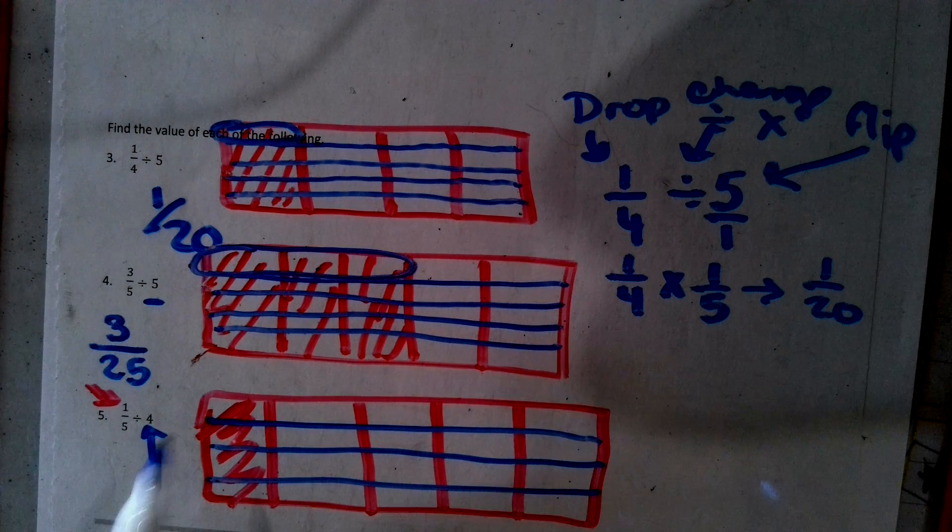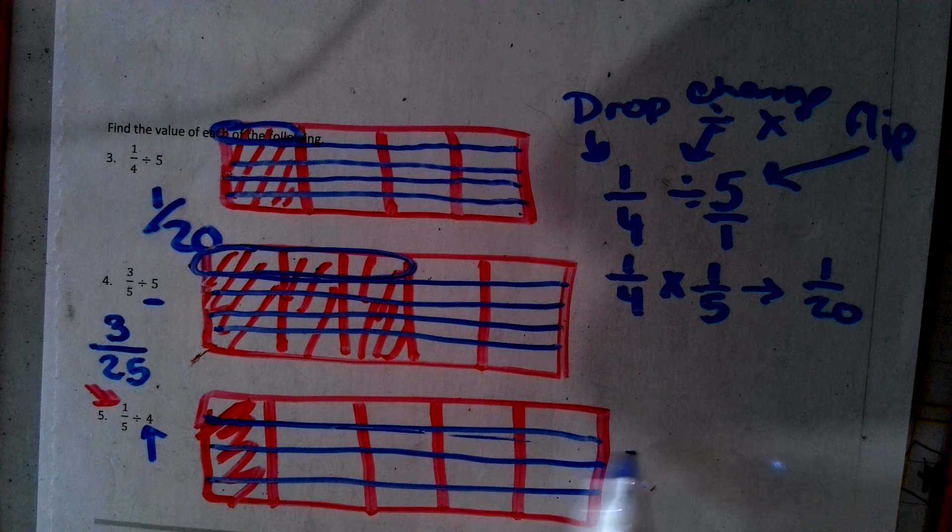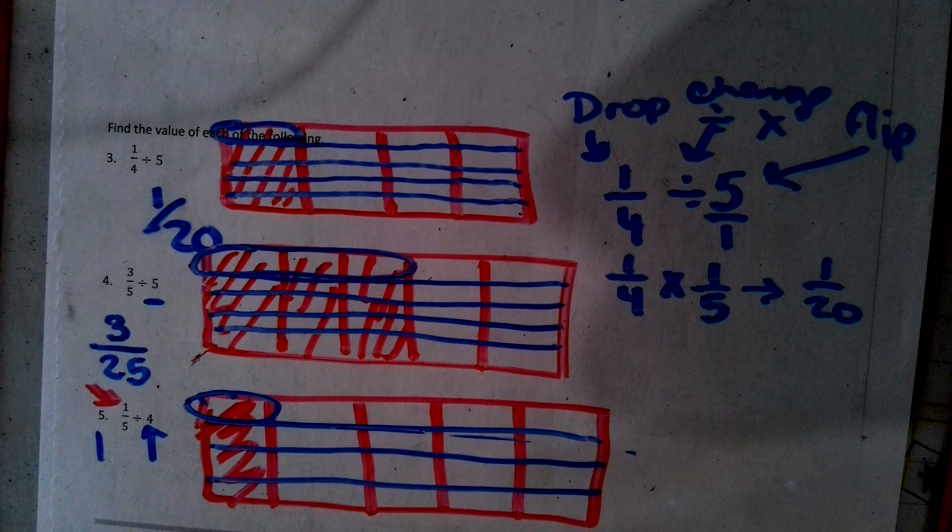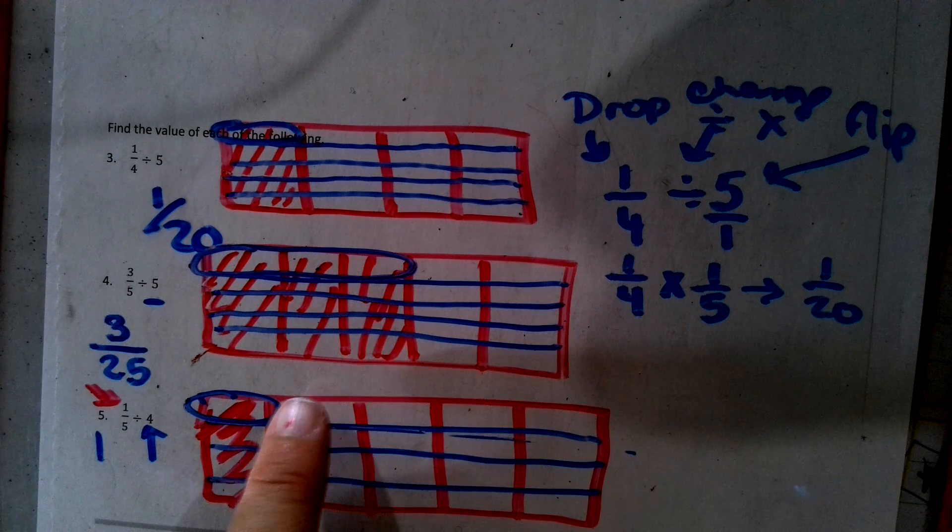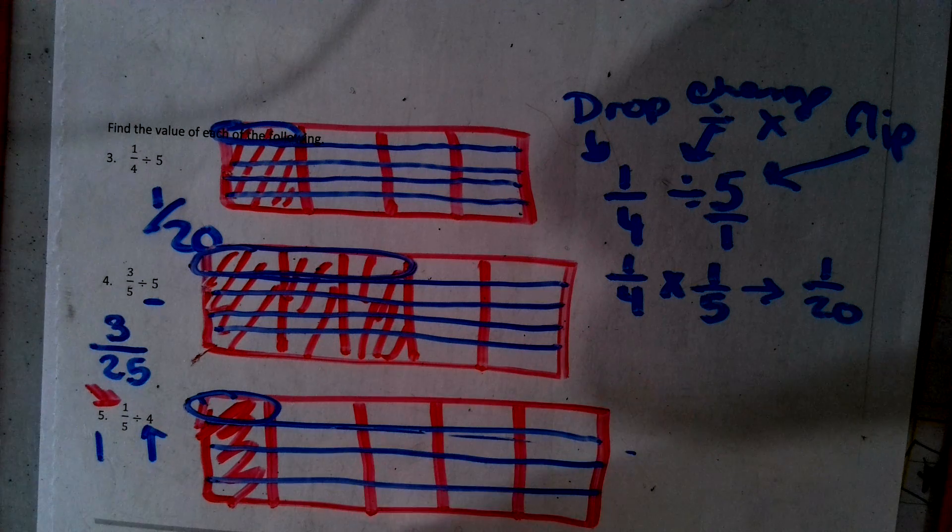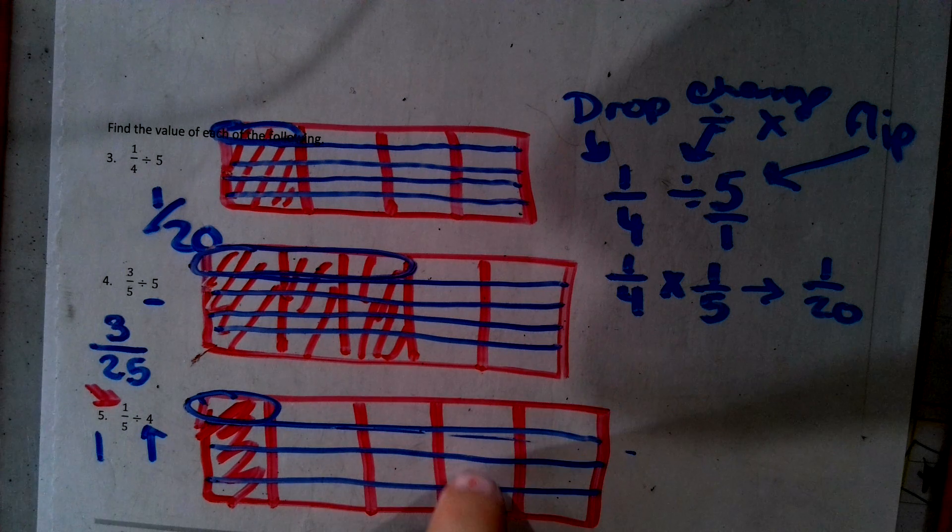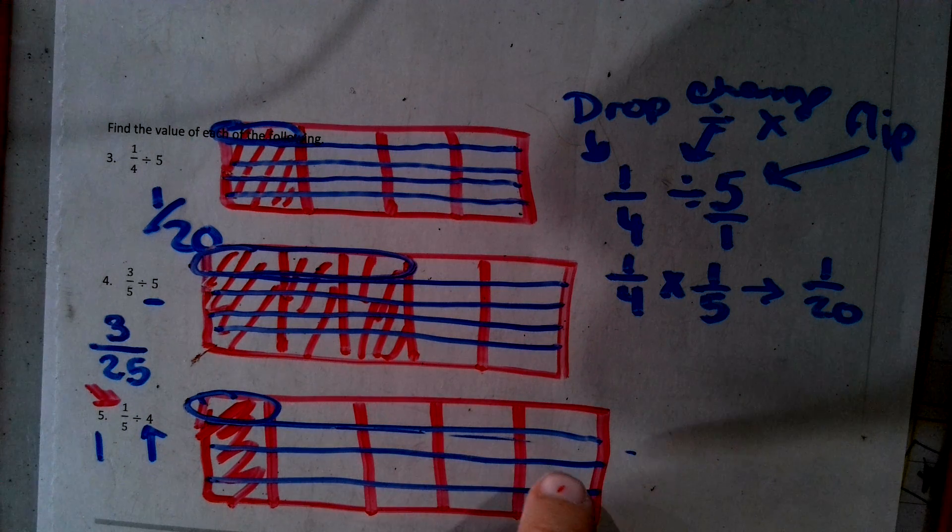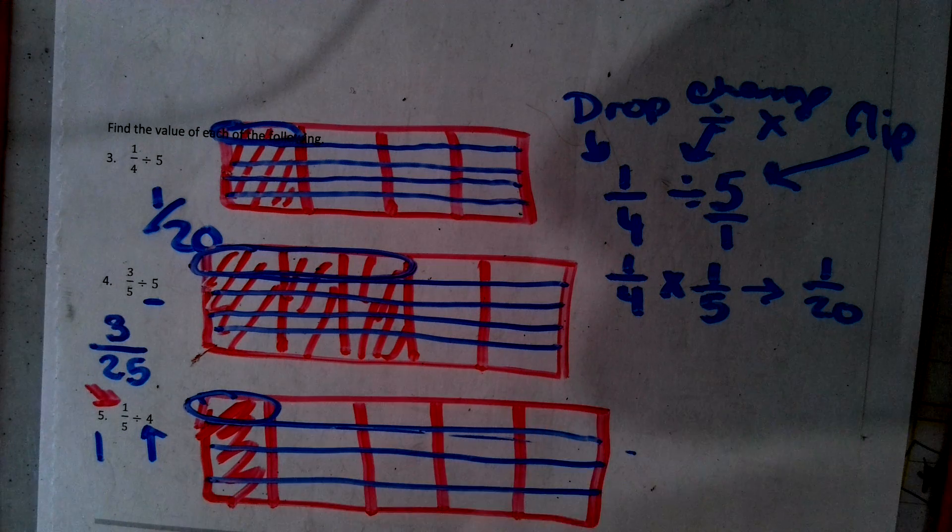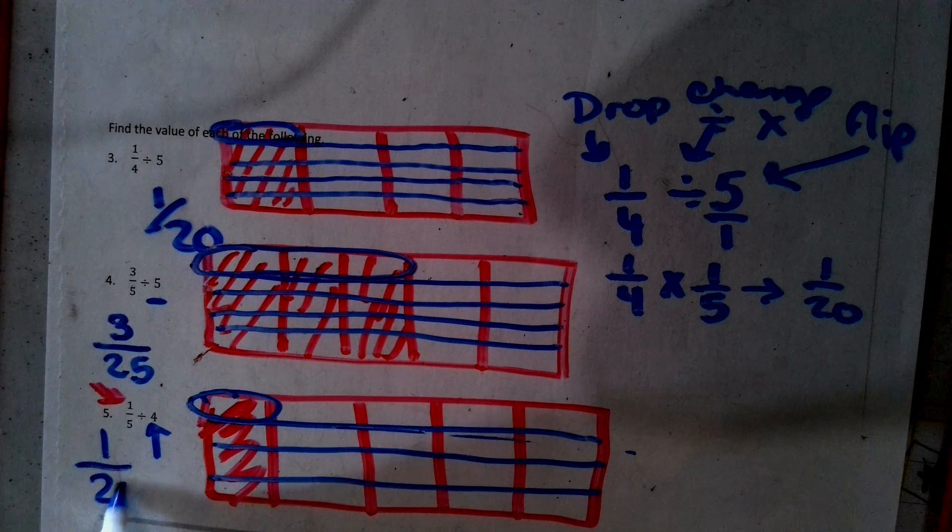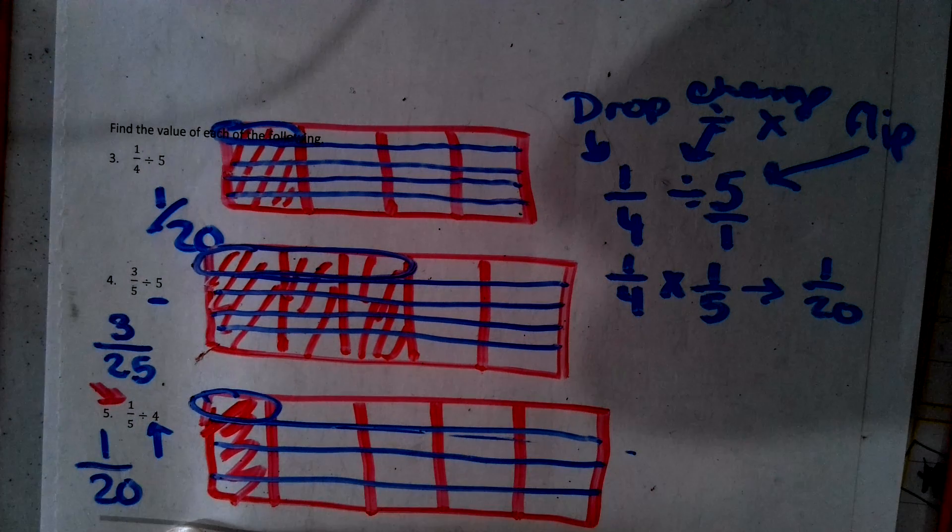How many sections are there in one line that's colored in? One part. So I have one at a four, eight, twelve, thirteen, fourteen, fifteen, sixteen, seventeen, eighteen, nineteen, twenty. So 1/20 is the answer to this one.